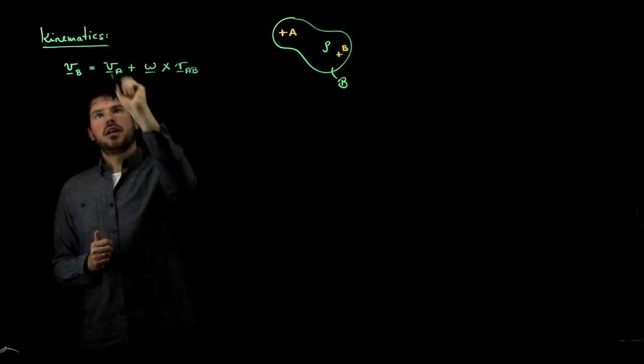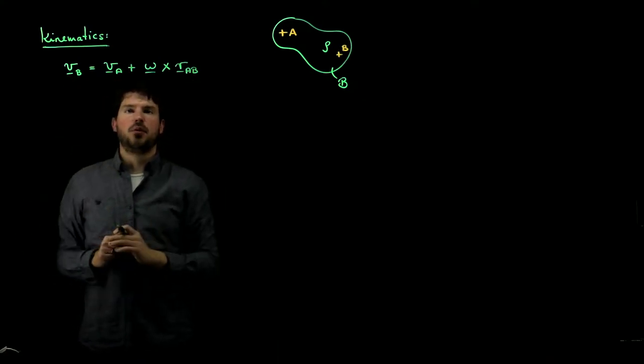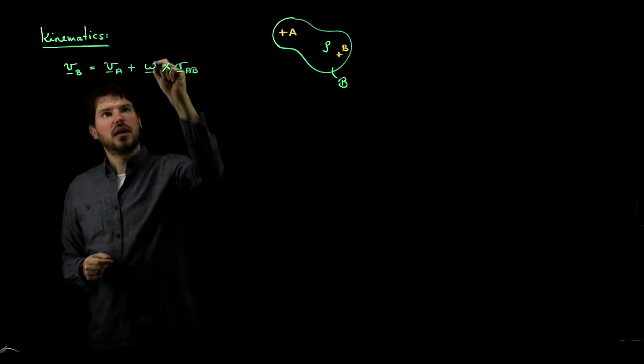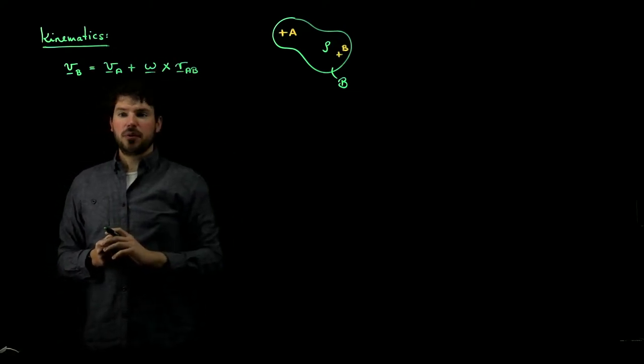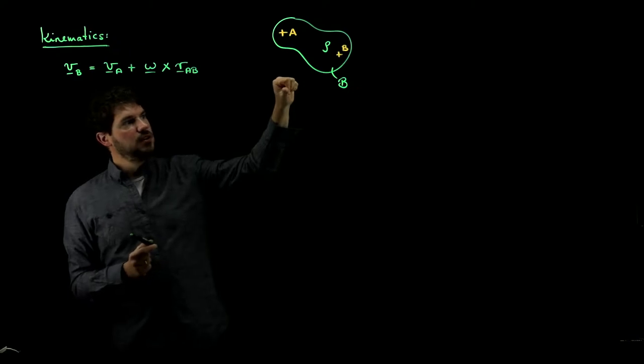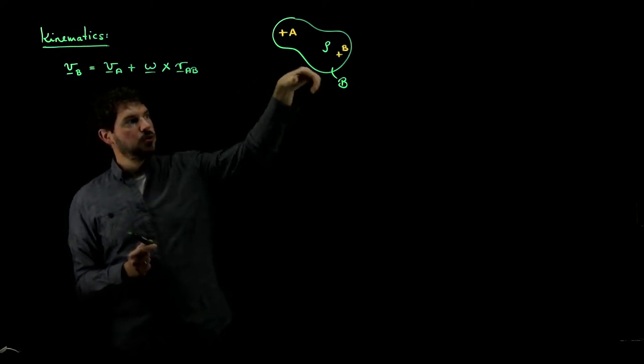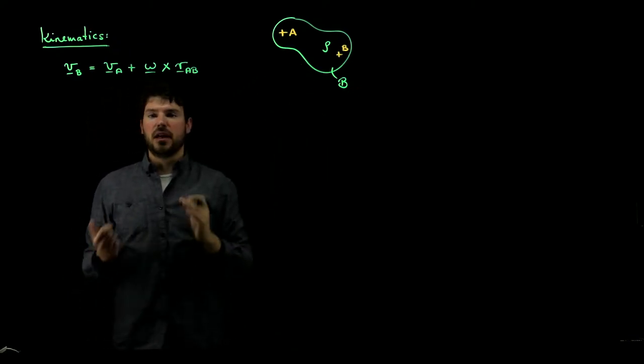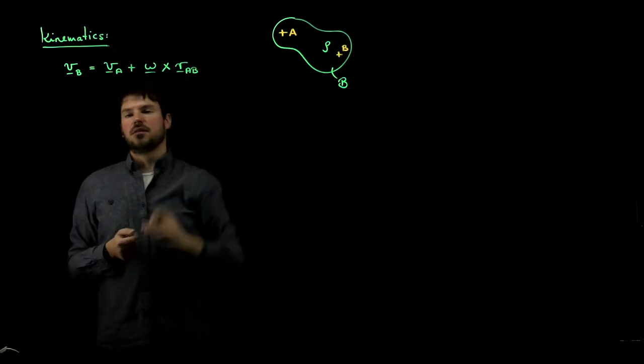And so if you know the velocity at any point A and want to know the velocity at point B, all you need to know is what's the angular velocity vector. Remember there was a vector pointing in the direction about which we're rotating and its magnitude is the angular velocity.